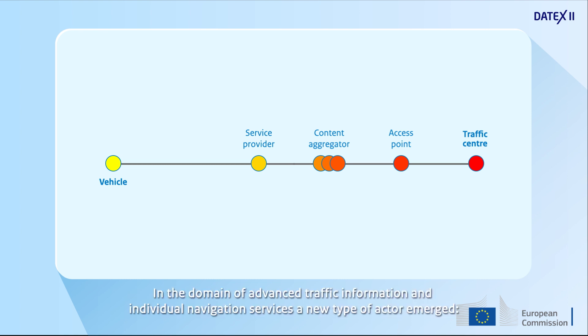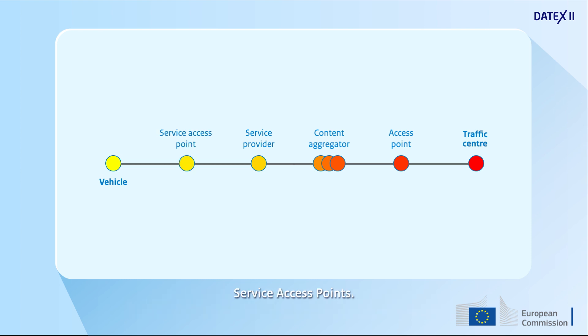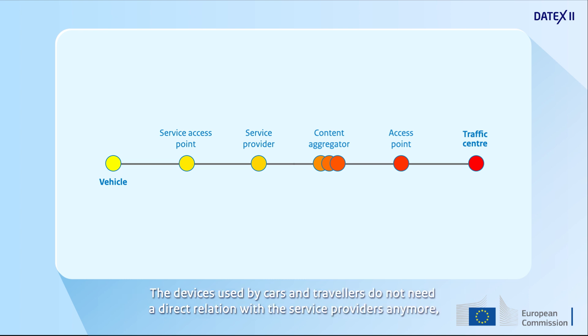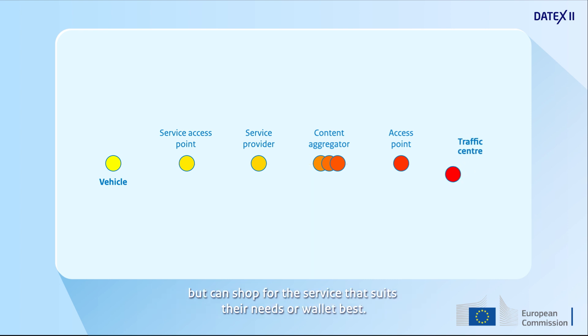In the domain of advanced traffic information and individual navigation services, a new type of actor emerged – service access points. They manage the information provisions to the road user and vehicle from different service providers in an efficient and effective way. The devices used by cars and travelers do not need a direct relation with the service providers anymore, but can shop for the service that suits their needs or wallet best.